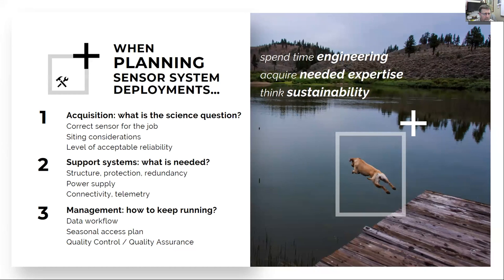When planning these kinds of system deployments — whether you've gotten a grant or you're pursuing one or you want to expand your network — before you jump in, there are a few items to spend a lot of time on upfront: engineering the systems, making sure you have the right people who can handle the variety of systems and long-term maintenance issues, and thinking really hard about sustainability. When I talk about sensor networks, I get to three key issues: what's your science question, what are you trying to acquire the data for, and making sure you have the right sensors for the job, as well as siting considerations.